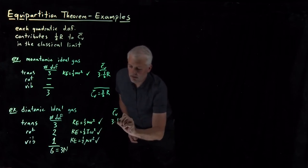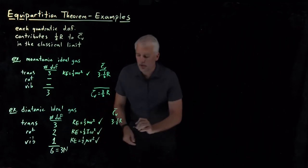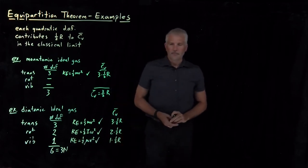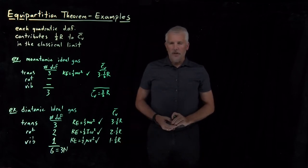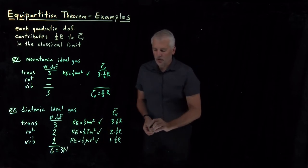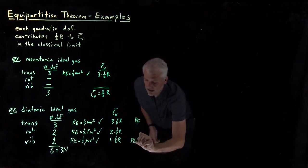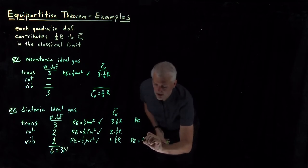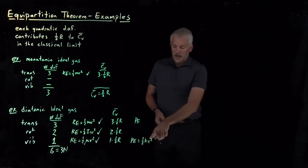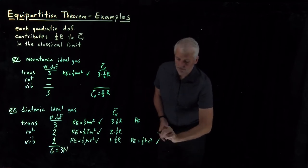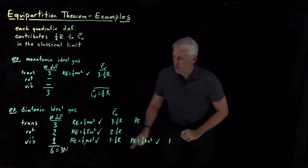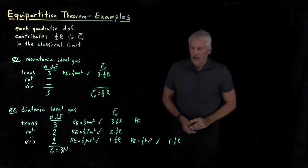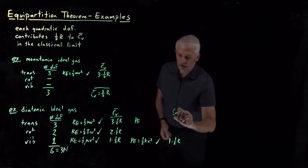Three quadratic translational degrees of freedom contribute three times one-half R. Two rotational degrees of freedom each contribute one-half R. One vibrational kinetic energy degree of freedom contributes one-half R. But we must also consider potential energies. When we model vibration as a harmonic oscillator, we include a potential energy term of one-half k x squared. That is also a quadratic degree of freedom, so the one vibrational mode contributes an extra one-half R from potential energy as well.